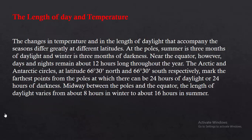Last, we have the effect on the length of the day and the temperature. The Earth has various zones and various tropics. Accordingly, the weather, temperature, and time change. The Arctic and Antarctic circles, at latitude 66 degrees 30 minutes north and south respectively, mark the furthest point from the poles. In these regions, there can be 24 hours of daylight or 24 hours of night. At the midway point between the poles and the equator, the length of daylight varies from about 8 hours in winter to about 16 hours in summer. Temperature also varies with the equator and with day and night.